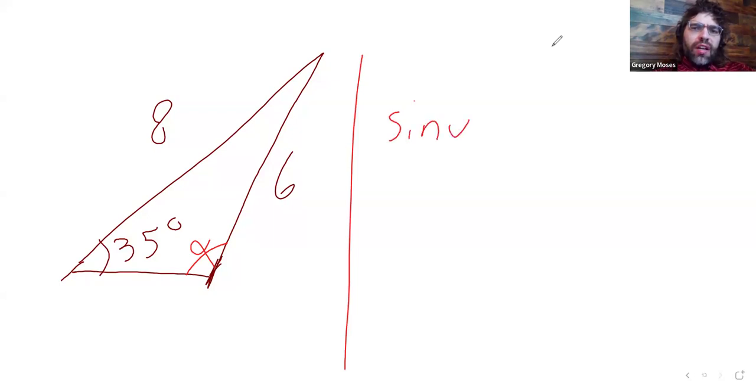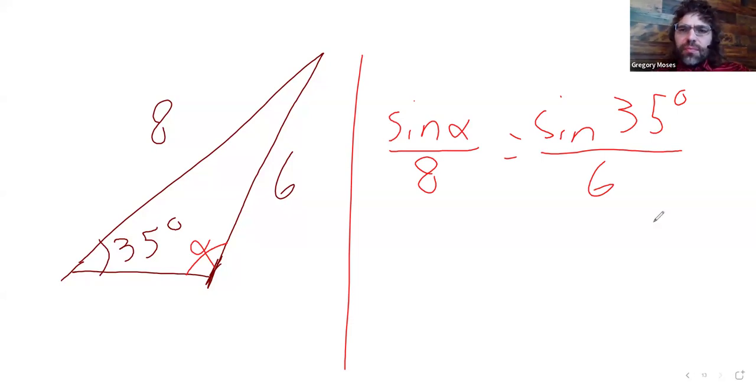Then the sine of alpha over 8 is the sine of 35 degrees over 6. Then the sine of alpha equals, we multiply both sides by 8, 8 times the sine of 35 degrees over 6.